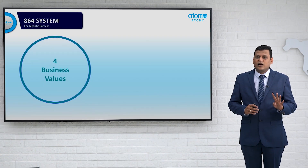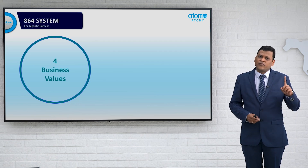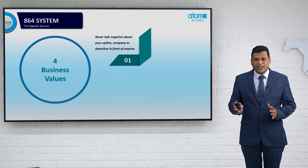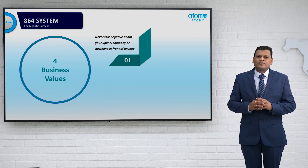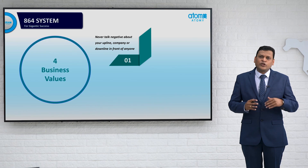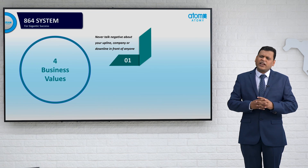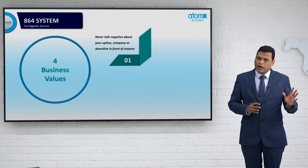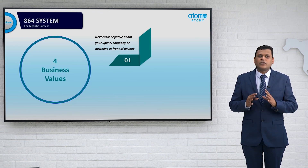Now the 4 in the 864 system refers to four business values. The first business value is to never talk negatively about your upline, downline, or company in front of anyone. If you talk negatively about your downline in front of your upline, negativity surrounds you. Never talk negative — not about the upline, not the downline, and not about the company.